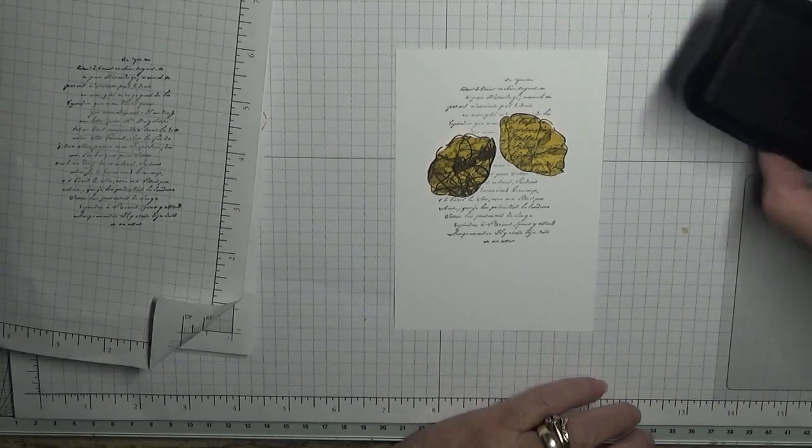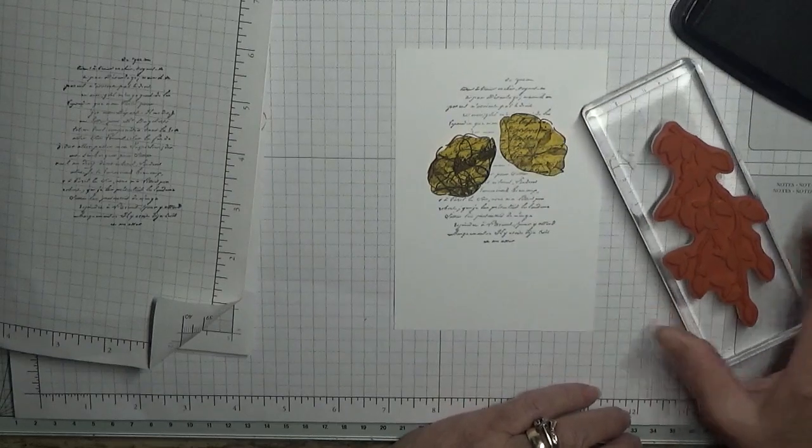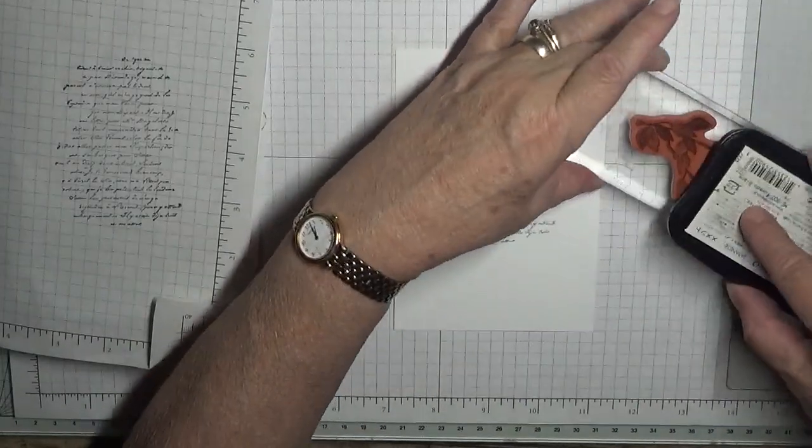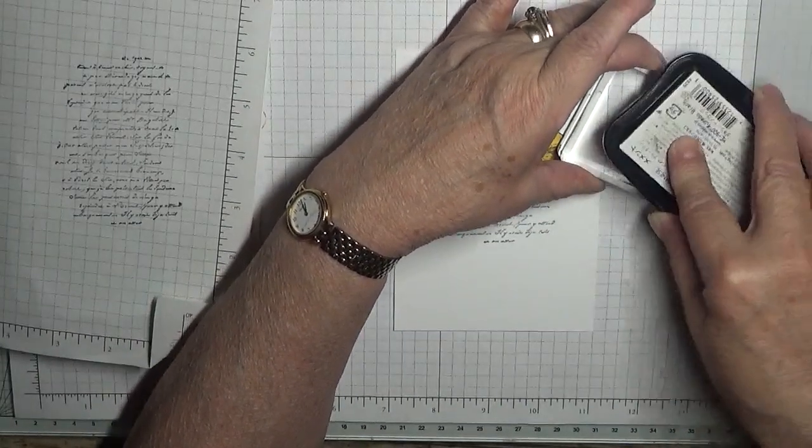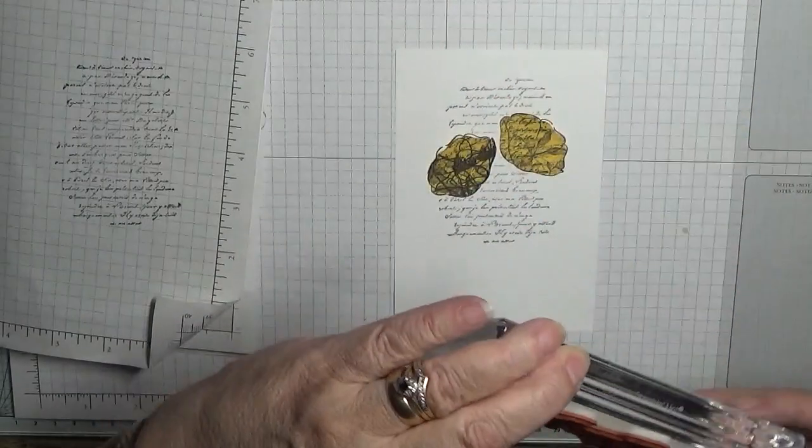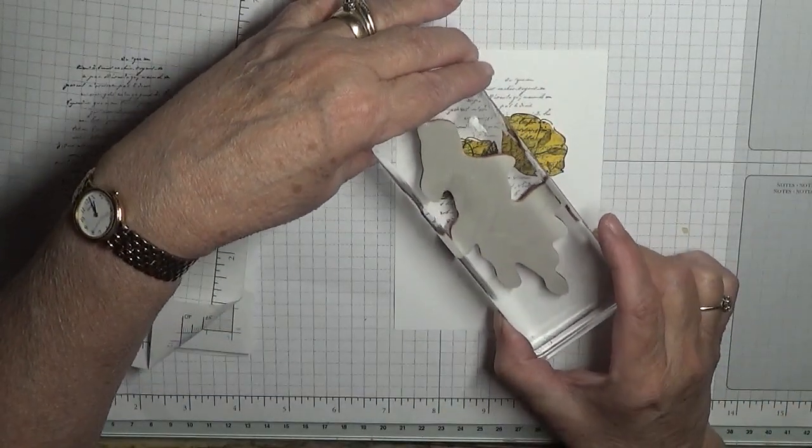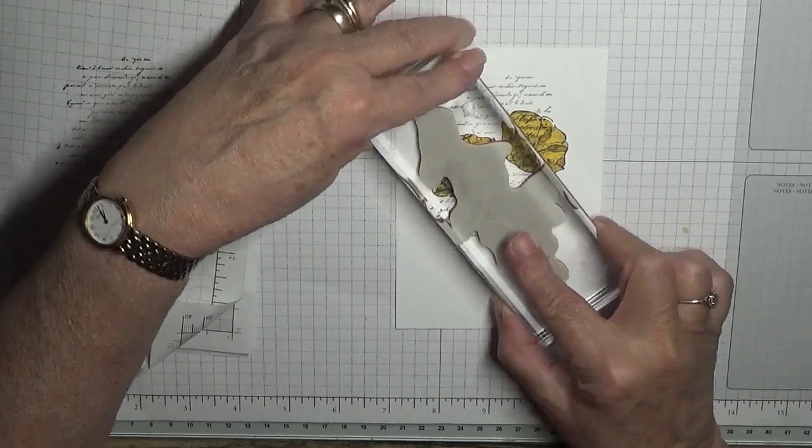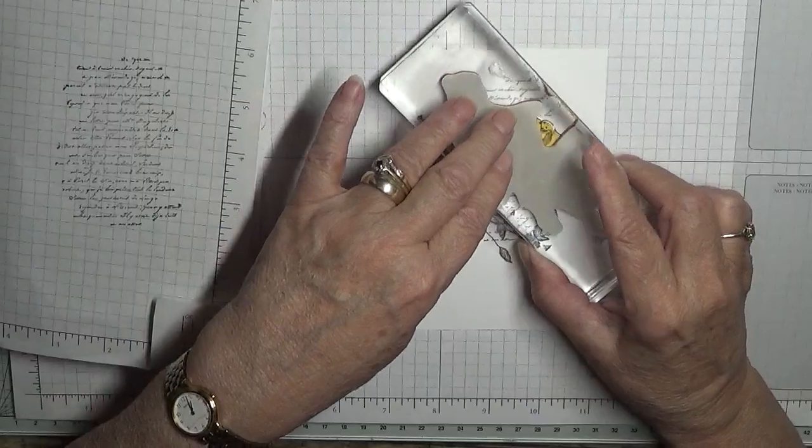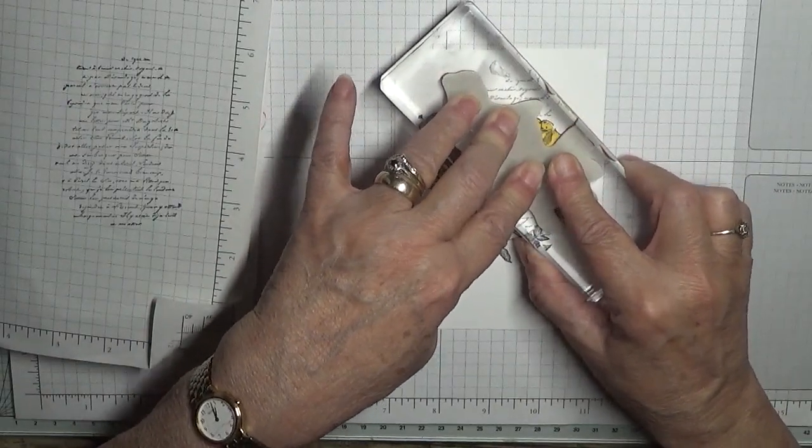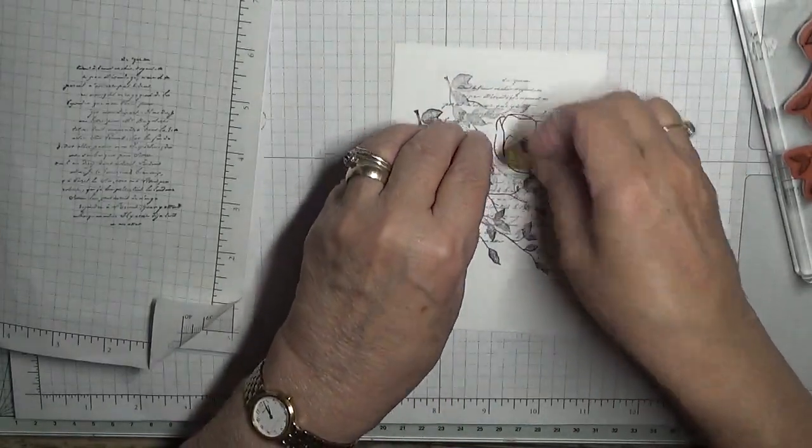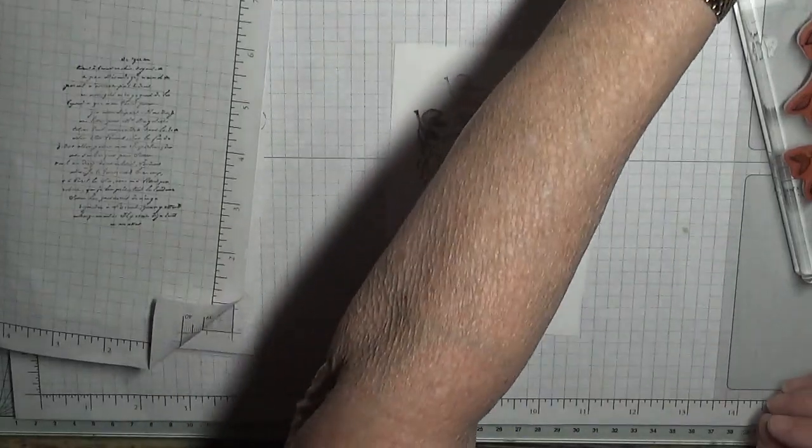And then we get the leaves. We're not going to stamp off the first one. We're just going to stamp it down, and then move over and stamp again. And that is that.